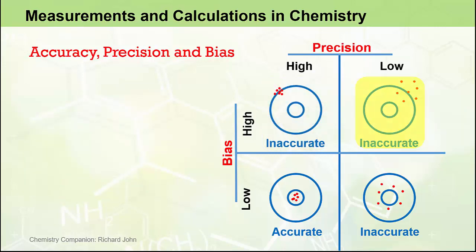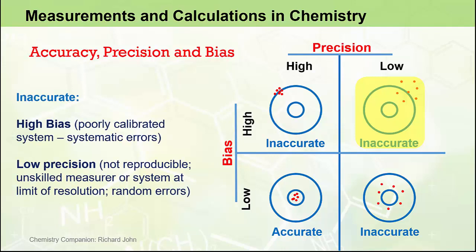The situation at the top right is also considered inaccurate because we have high bias and low precision — exactly the opposite of what we need to be accurate. We could consider this as an example of an unskilled marksman where the grouping of shots is not well grouped, and poorly calibrated gun sights cause shots to land consistently high and to the right of the bullseye. Relating this back to measurements, this could be a poorly calibrated measurement system creating systematic errors leading to high bias, combined with an unskilled measurer unable to make reproducible measurements. The lack of precision could also be due to the measurement system working at the limit of its capabilities and resolution, introducing random errors that are very difficult to fix even for a skilled measurer.